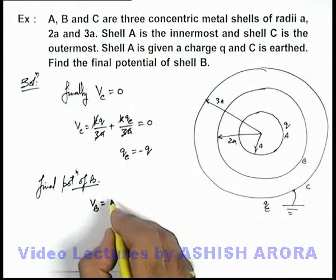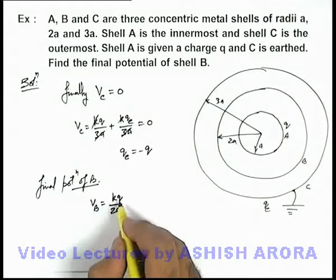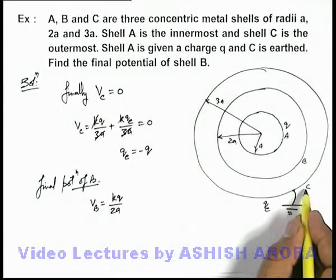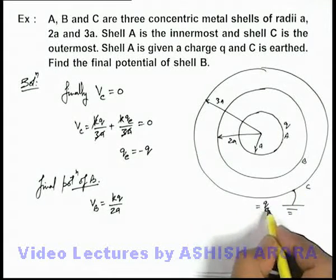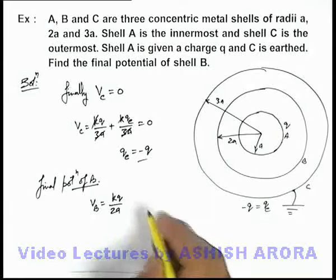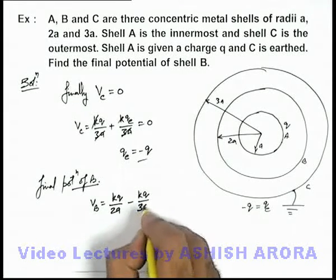So it can be given as kq/2a, which is the potential of B due to the charge on A. And due to the charge on C, as qₑ is given as minus q, we already calculated potential of B can be given as minus kq/3a.